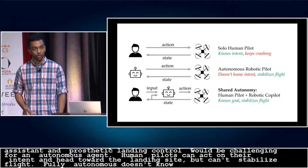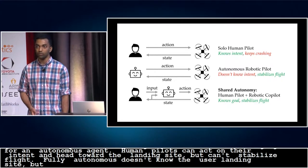Human pilots can act on their intent and head toward the intended landing site, but can't stabilize flight. A fully autonomous agent, on the other hand, doesn't know the user's intended landing site, but can easily avoid crashing. The idea behind shared autonomy is to combine user input with automated assistance to achieve the user's intent.